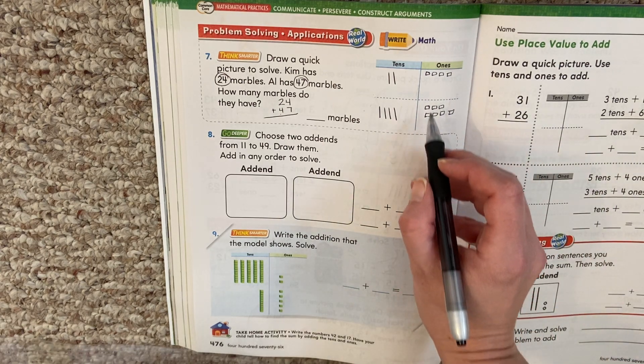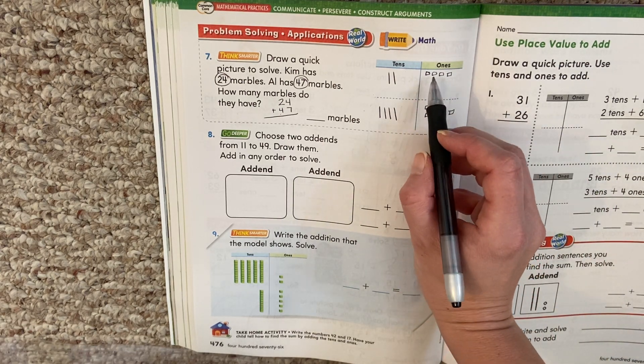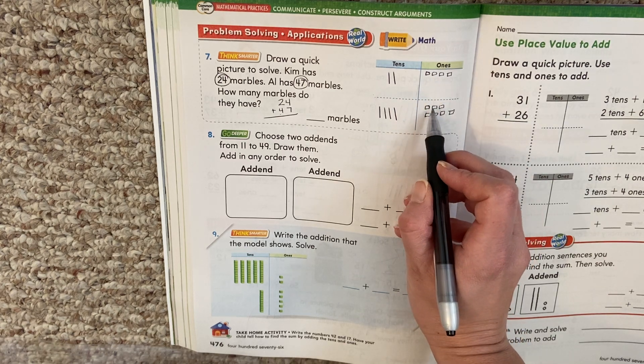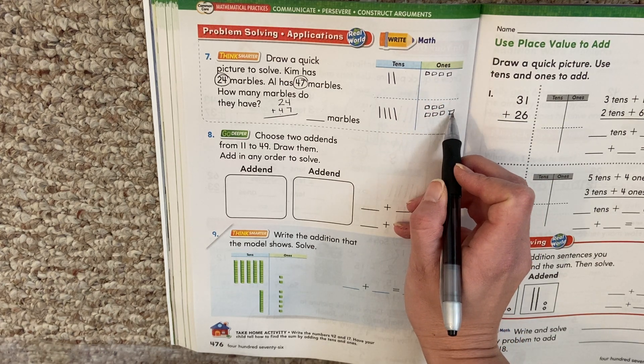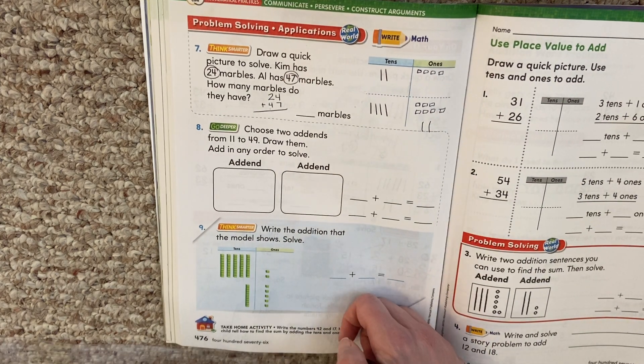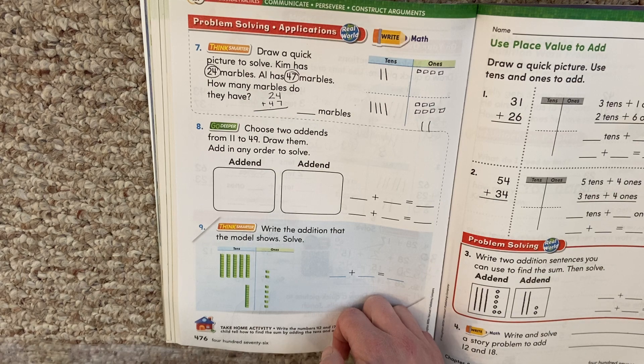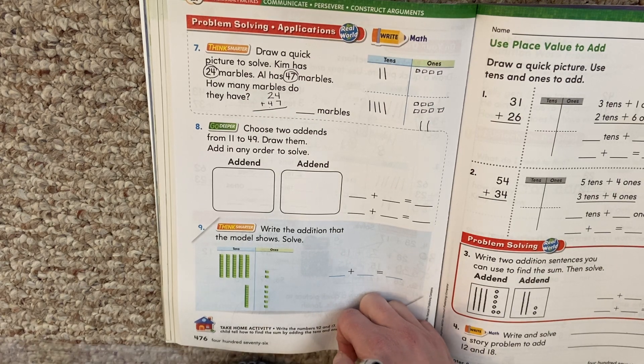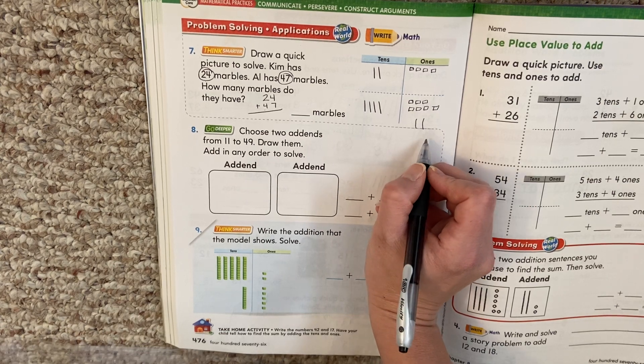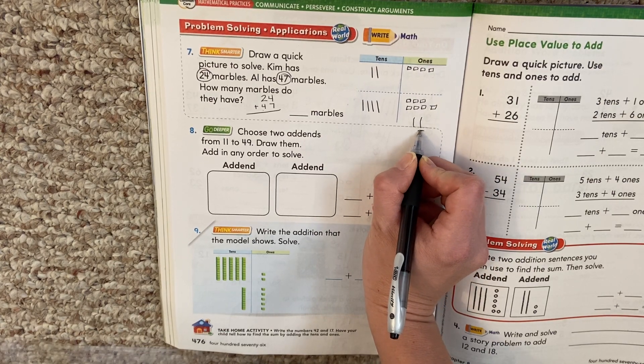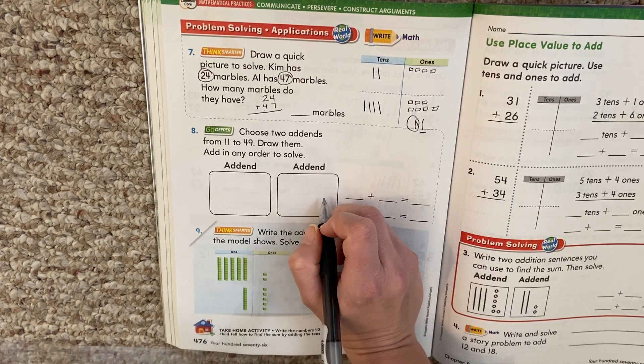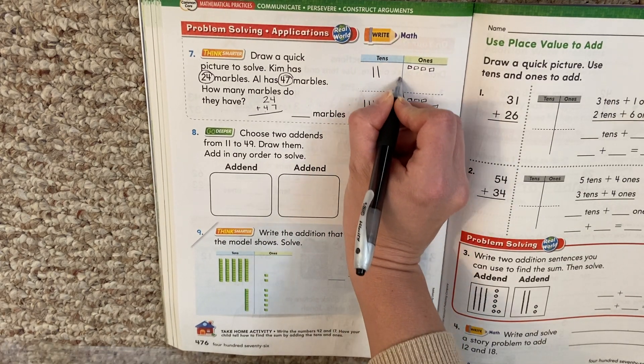First thing we're going to do is add the ones. Let's count them. One, two, three, four, five, six, seven, eight, nine, ten, eleven. Whoa. Eleven. Too big. What do we do? We keep the ones place. What are we going to do with the tens place? The tens place gets moved. Move it over here. Got to move it to the tens place.